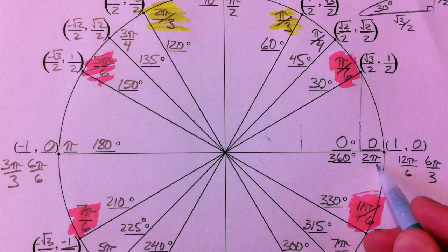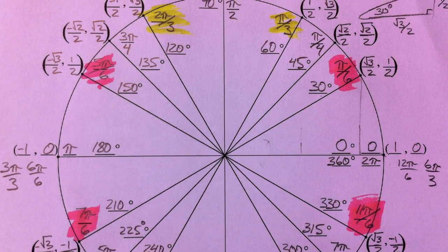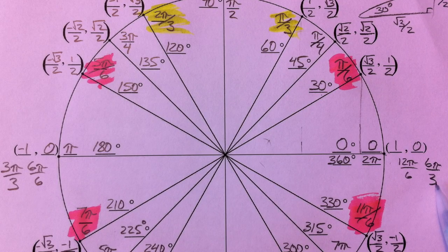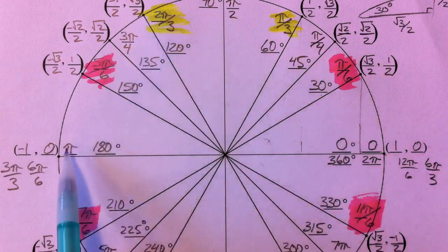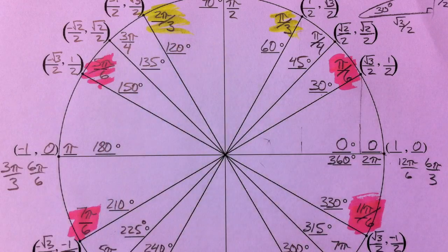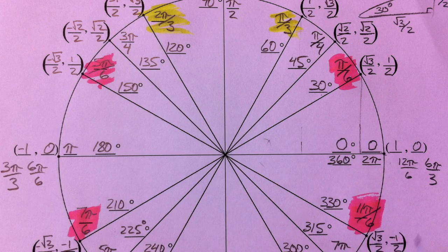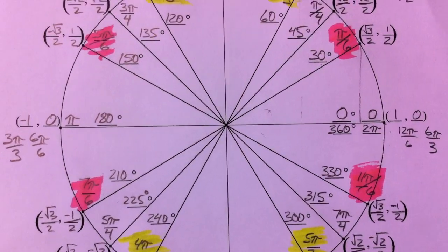Notice then that you have two pi over three, which is one less than three pi over three; four pi over three, which is one more than three pi over three; and five pi over three, which is one less than six pi over three. Then what's left to look at are the over fours.